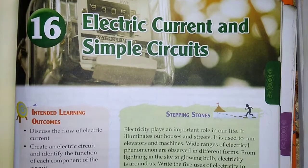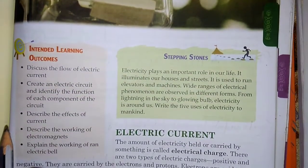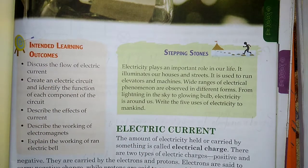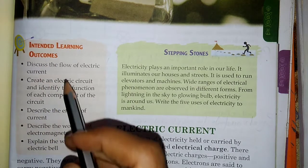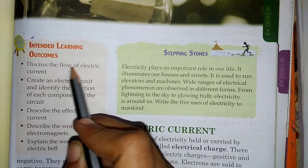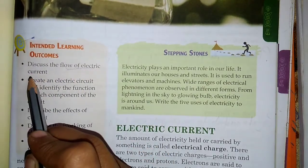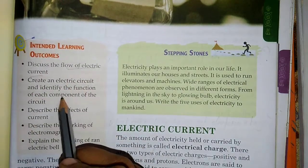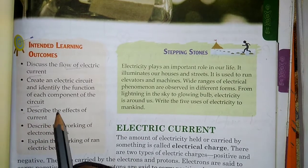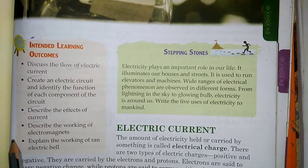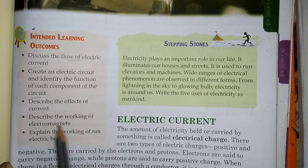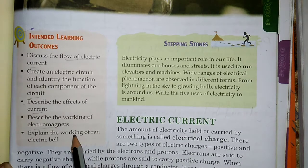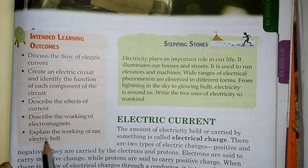Now guys, we are going to learn about this chapter. These are the topics we are going to cover: First topic is Flow of Electric Current. Second topic is Electric Circuit and functions of each component. Third point is Effect of Current. Fourth topic is Working of Electromagnets. Last topic is Working of Electric Bell.